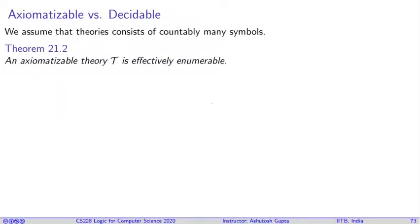We assume that theories consist of countably many symbols. This is a common assumption and often can be relaxed, but for this course let's assume everything is countable as we have been always considering everything countable. We prove a theorem that an axiomatizable theory T is effectively enumerable.